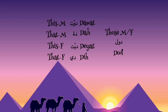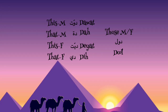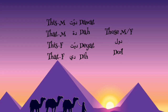First, we have the form for male. If something is close to me and it's a male thing, I'm going to say 'Dawat'. That for male — far away — is 'Da'. So 'Dawat', 'Da'.